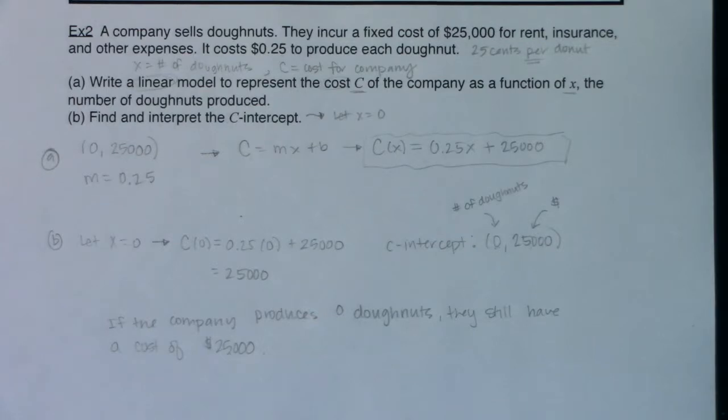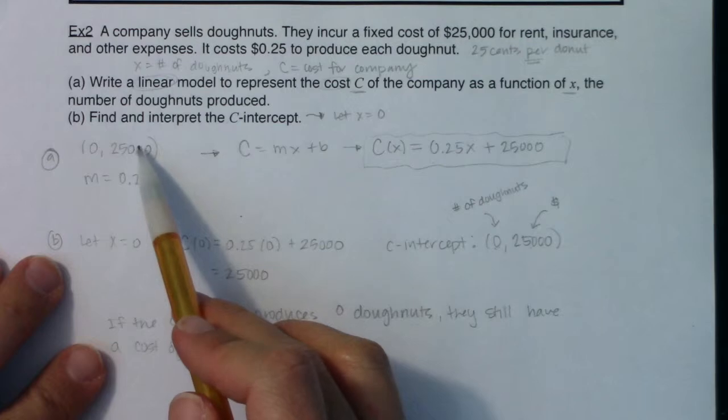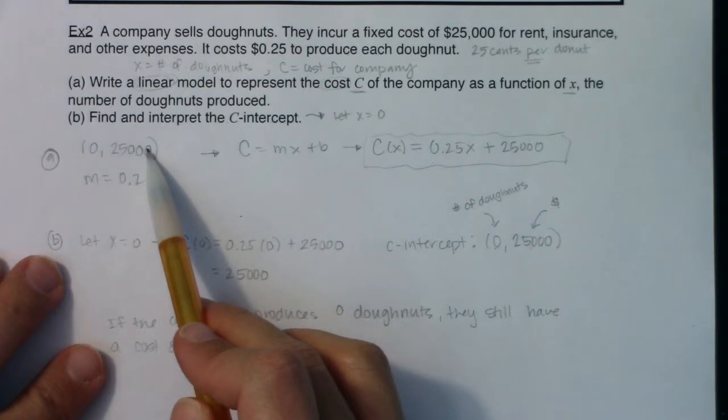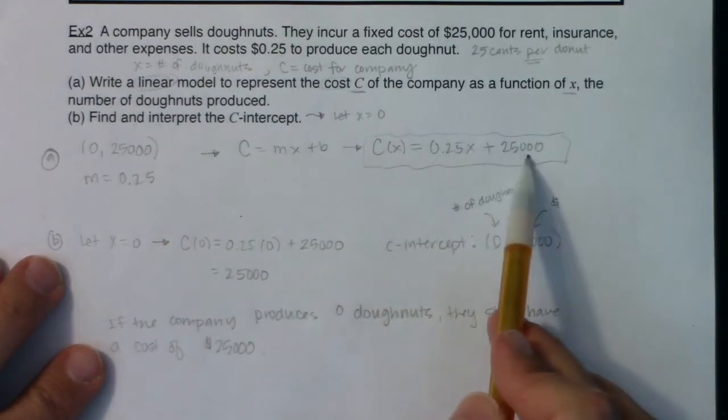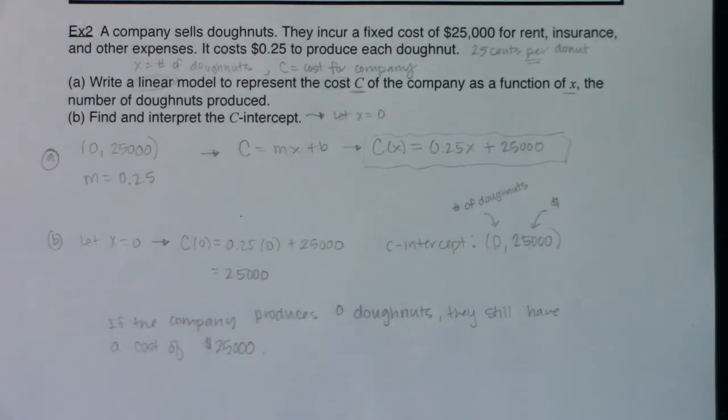So now we've done two problems. We did example one, where you were given two ordered pairs. You found the slope between them, then built your linear model. Here it was a little bit more direct because you were given one ordered pair and the slope. And on top of it, this ordered pair happened to be the C-intercept, so we were able to build our linear model. And then we were able to answer the question asked of us. So when we get to the next page, we'll have to decipher for ourselves: is this the type of problem where I was given two ordered pairs, or is this the type of problem where I was given an ordered pair and a slope? And then we'll try and work it out. I'll see you in a few. Bye.